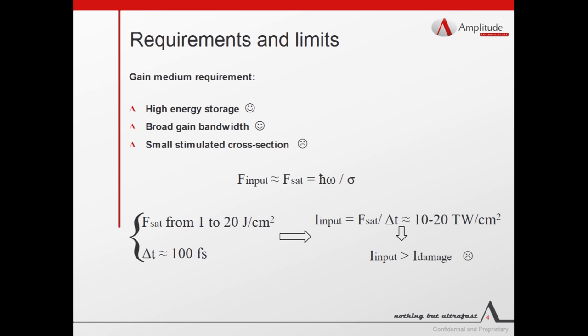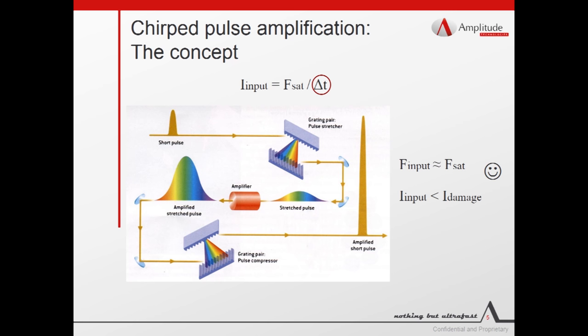The way to circumvent this problem arises with the chirped pulse amplification technique. To overcome the limit of the damage threshold, we could play on both the input energy fluence and the pulse duration. Since high energy fluence is required for obtaining efficient amplification, the only degree of freedom is the pulse duration. CPA technique is finally based on this principle. The short input pulse is firstly stretched up to a thousand times of its original pulse duration. By this way, it could be amplified without damaging the gain medium.